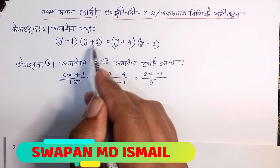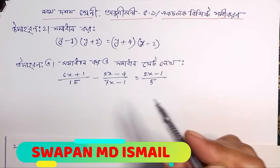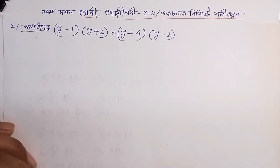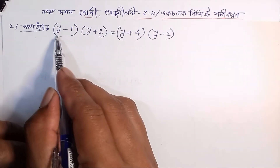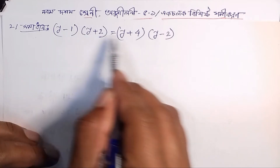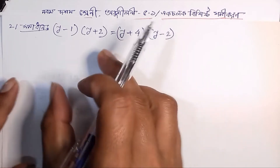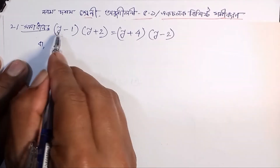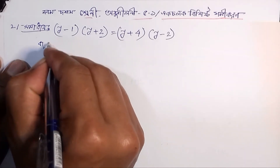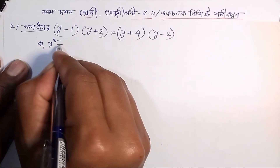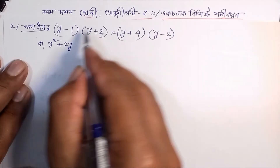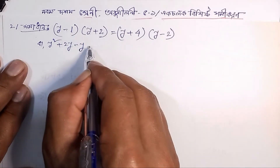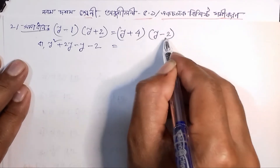The first problem: (y-1) into (y+2) is equal to (y+4) into (y-2). We have factors y-1, y+2, y+4, and y-2 on each side.